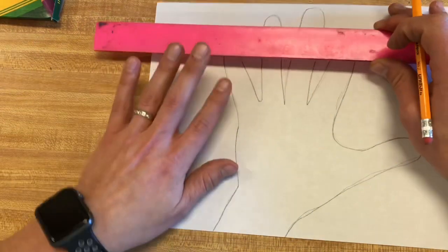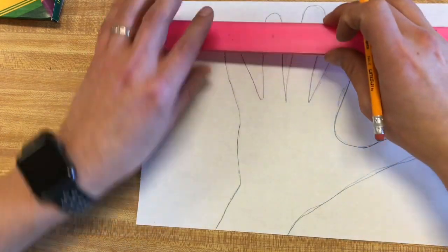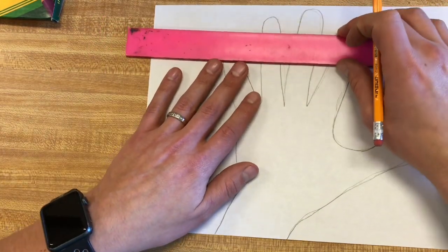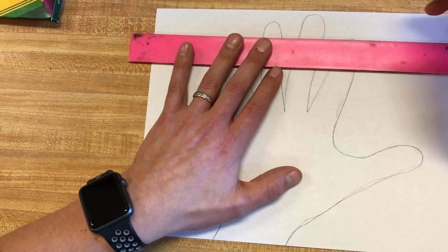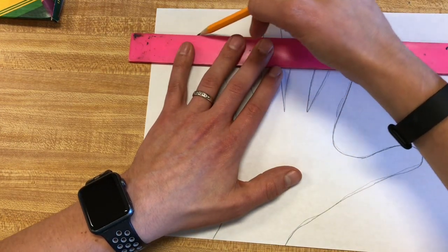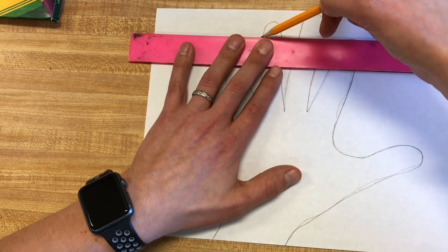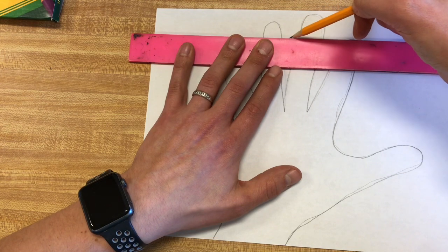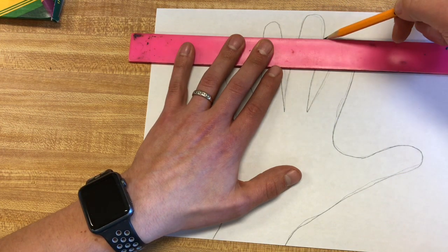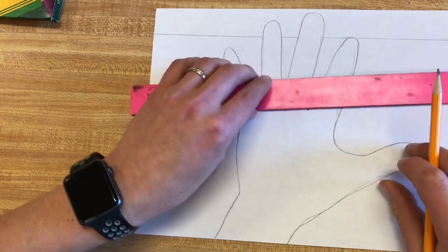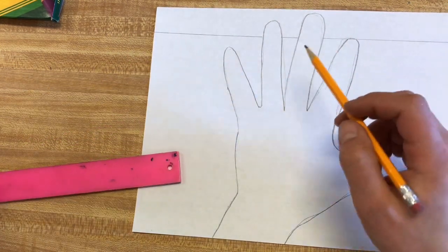If you got a ruler you can go right over it. I still start off lightly just in case I make a mistake, and then I kind of skip over the finger, still do in the background, skip over the finger, and then do the background.